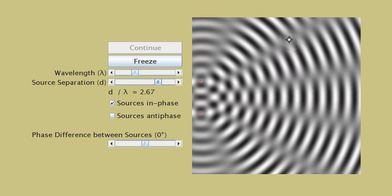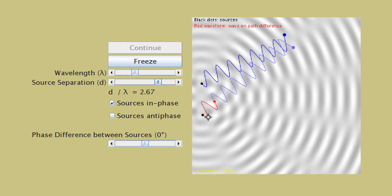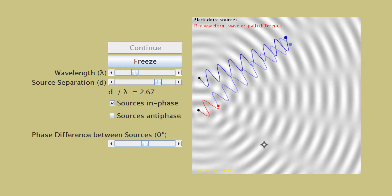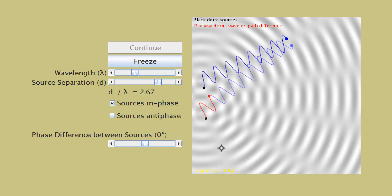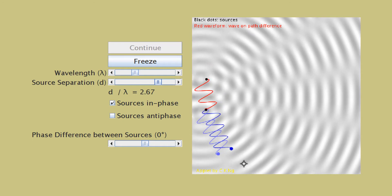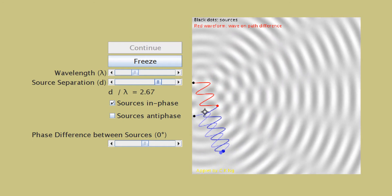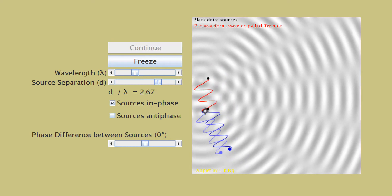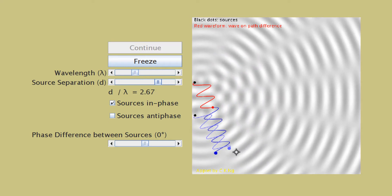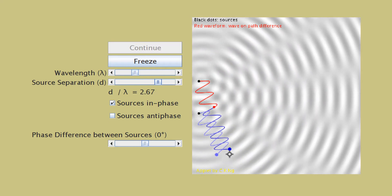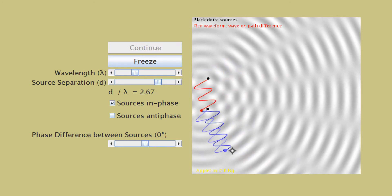And likewise here, when the path difference is one and a half lambda, they will arrive in antiphase. Maybe I should pick a point on this side. So look at the black dots. The black dots are in phase. So the waves leave the sources in phase, but they arrive out of phase. That's because the path difference is two and a half lambdas.